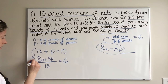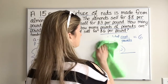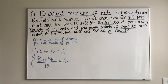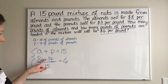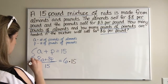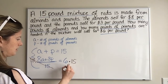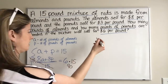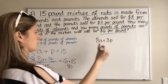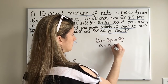Now here's our system. Let's not make life more complicated than it has to be — we've got a fraction, so let's get rid of it. Multiply both sides by 15: the denominator cancels, and 6 times 15 is 90. So we can rewrite this as 8A plus 3P equals 90. And our other equation is A plus P equals 15.